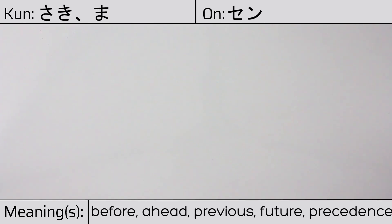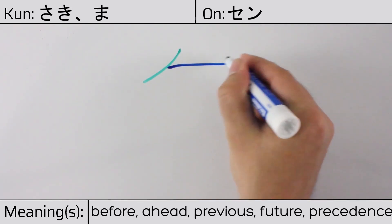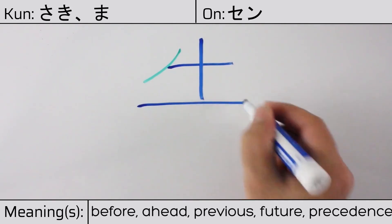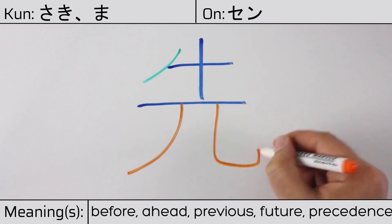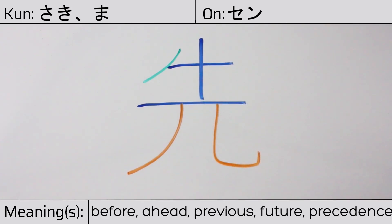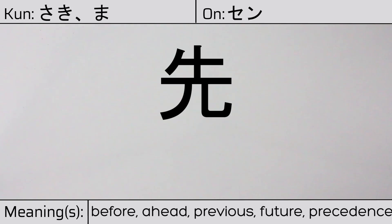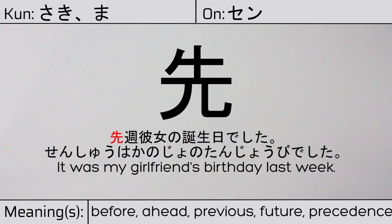This character is made up of the following radicals or parts: katakana no, followed by tuchi, and then the human legs radical. You can remember this kanji by the following hint: the cow is a high-ranking animal in certain traditions, where the human legs radical originally meant high. Our example sentence is: 先週、彼女の誕生日でした — It was my girlfriend's birthday last week.